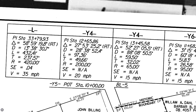For the curve on the L line, we're told it has a PI station at 33 plus 79.93. It has a delta — an intersecting angle between the back tangent and the forward tangent — of 58 degrees 59 minutes 19.8 seconds, turning to the right. This curve has a degree of curve of 13 degrees 38 minutes 30.7 seconds, corresponding to a radius of 420 feet, a length of 432.41 feet, and a tangent length of 237.57 feet.